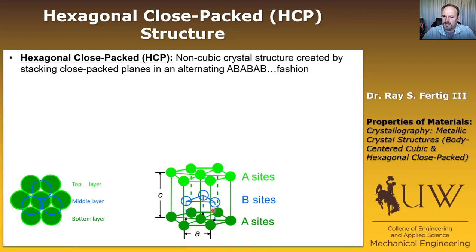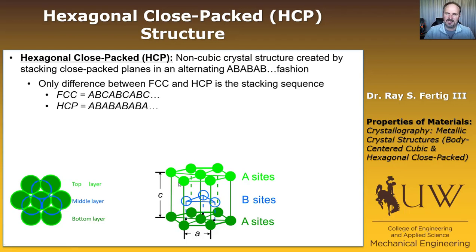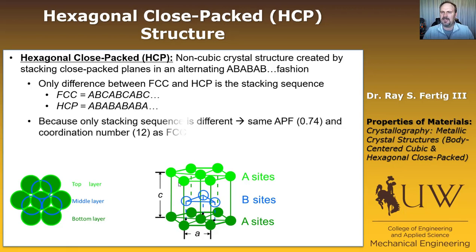So we end up with a structure that doesn't look cubic. Rather, it looks hexagonal — just stacking of closed-packed planes where we stagger one layer and then move it back. The only difference between FCC and HCP is the stacking sequence. Because the stacking sequence is the only difference, they shouldn't pack any differently. They have the same atomic packing factor of 0.74, and they also have the same coordination number of 12.